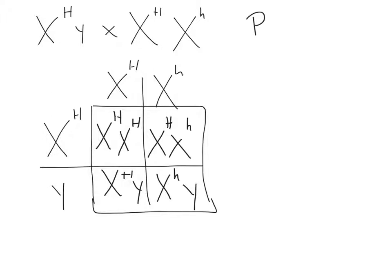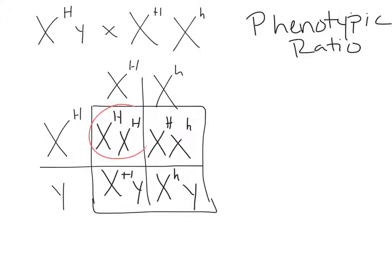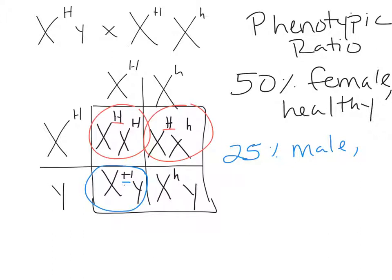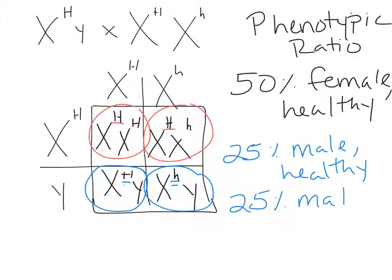To answer the question, we need to report the phenotypic ratio of the children. Translating each box: the top two boxes are both females with at least one copy of the big H allele, meaning they are both normal healthy individuals — so 50% females who are healthy. The bottom boxes: one male with a copy of big H, so 25% male and healthy. The other box has a male with little h — 25% male with hemophilia.